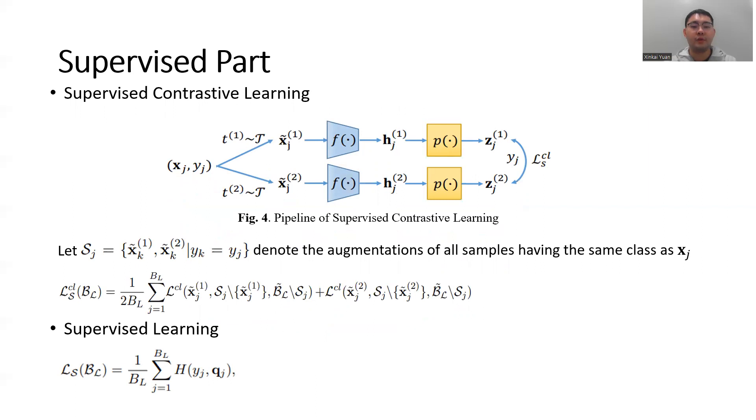Now, we move to the supervised part where things become easier with the help of labels. For contrastive learning, we obtain two augmentations for each input xj, and we let the set Sj denote all augmented samples having the same class as xj.